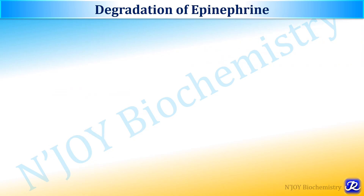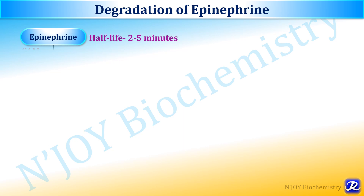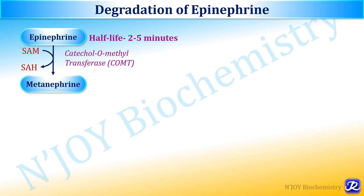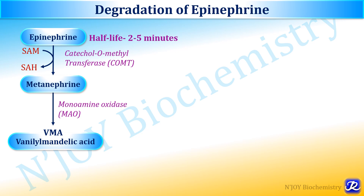Epinephrine has a very short half-life of 2 to 5 minutes. It is acted upon by the enzyme catechol-O-methyltransferase to form metanephrine. This is a transmethylation reaction where a methyl group is donated to epinephrine by S-adenosylmethionine, and S-adenosylhomocysteine is formed. Then metanephrine, by action of the enzyme monoamine oxidase, leads to formation of vanillylmandelic acid, that is VMA. The normal VMA excretion in urine is 2 to 6 mg per 24 hours.